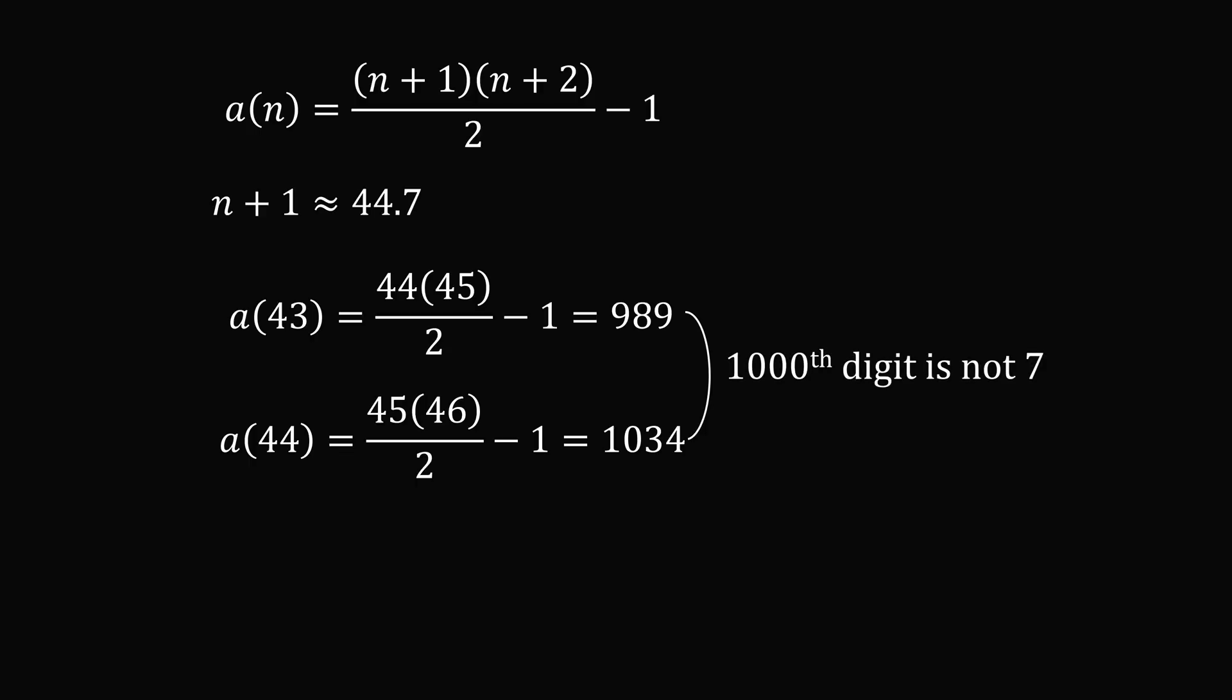So we see that the 1000th digit is not equal to 7, and that means the 1000th digit is equal to 0. And that's the answer.